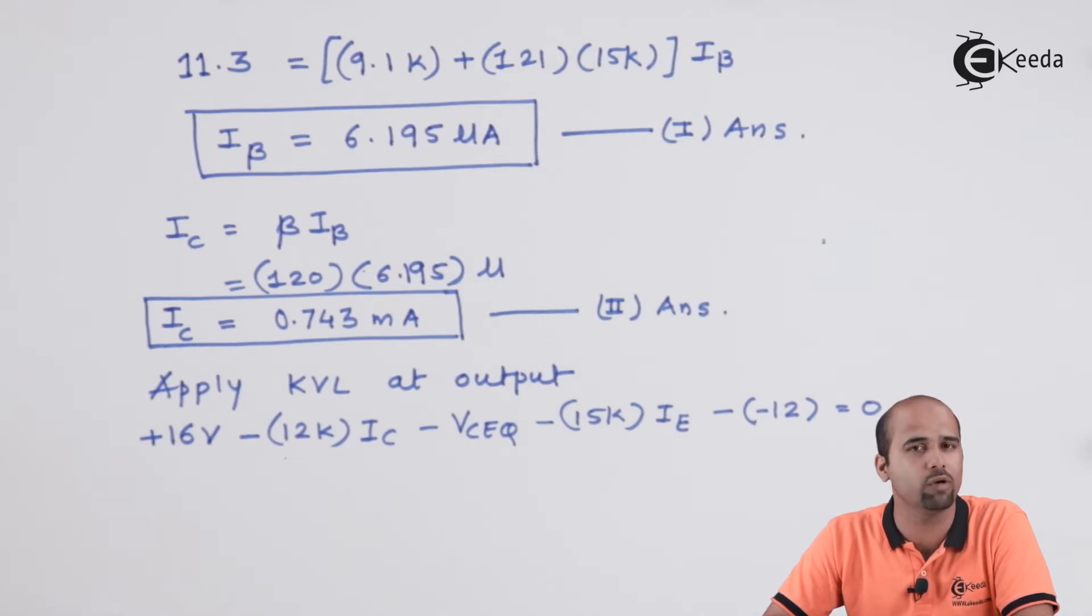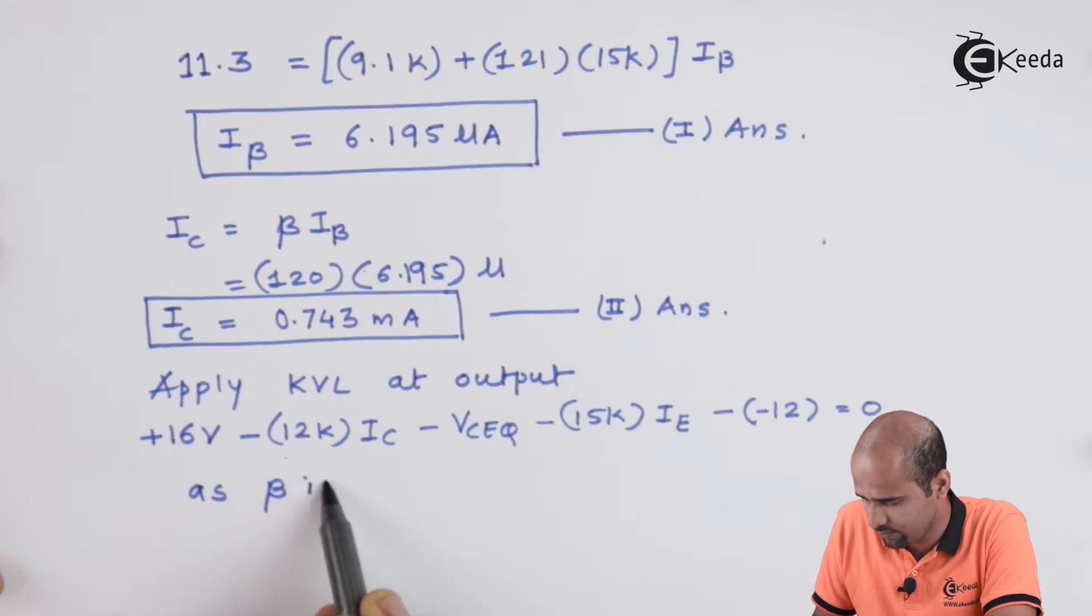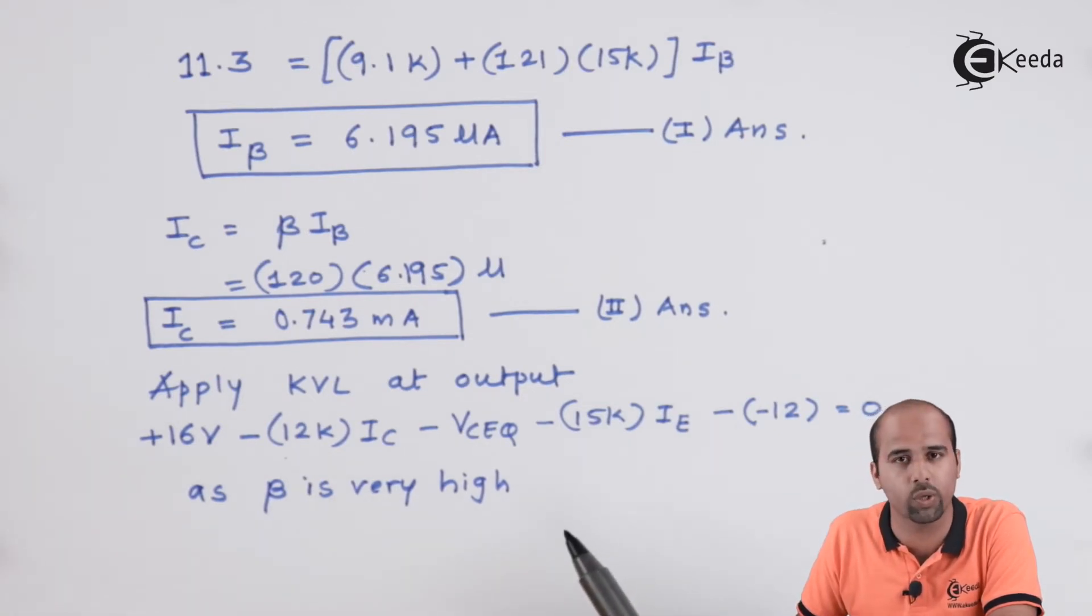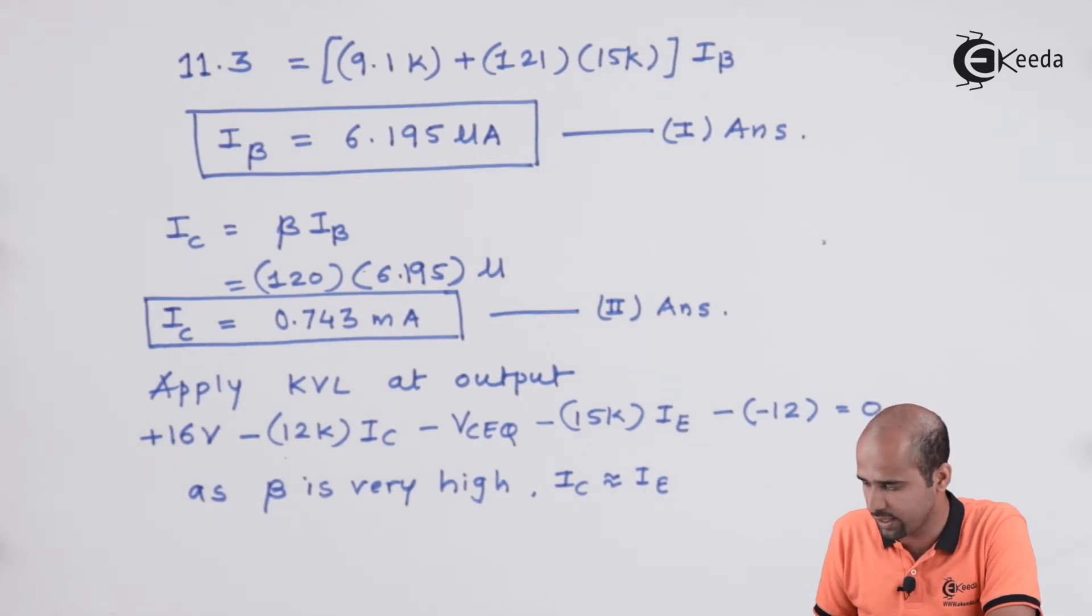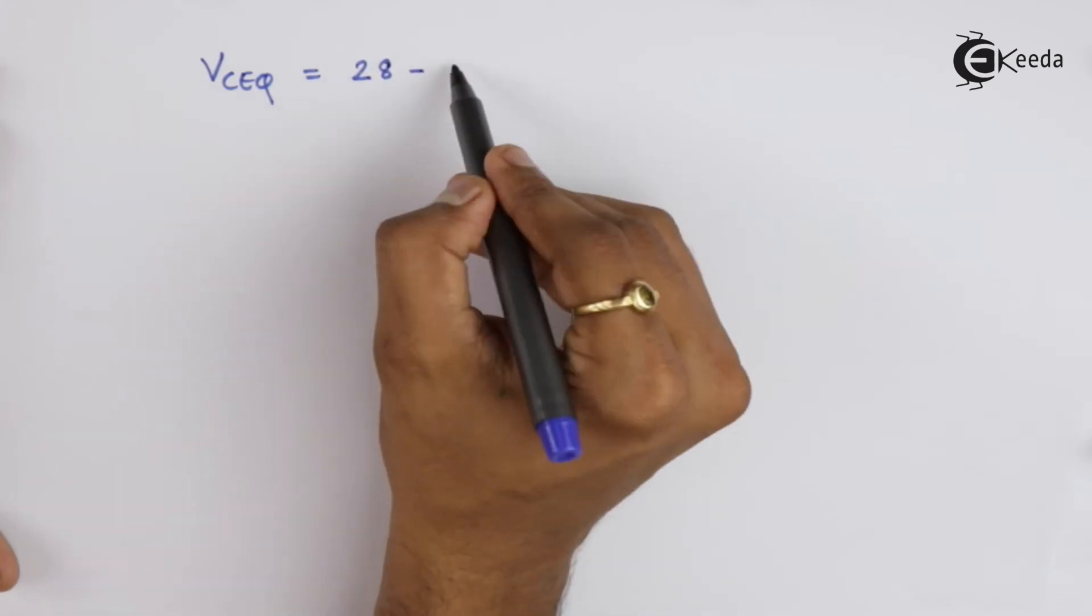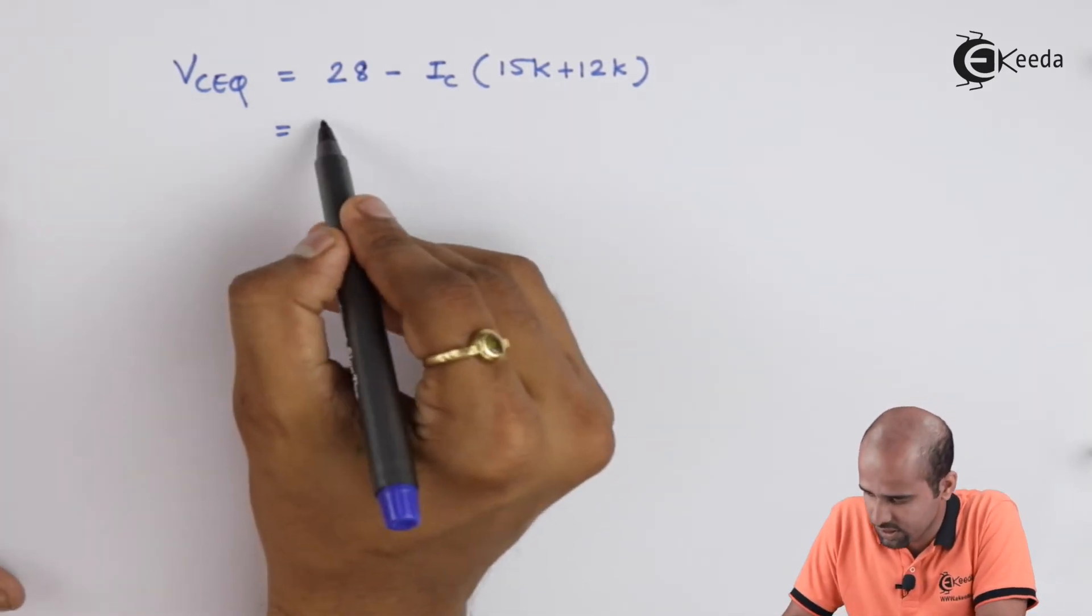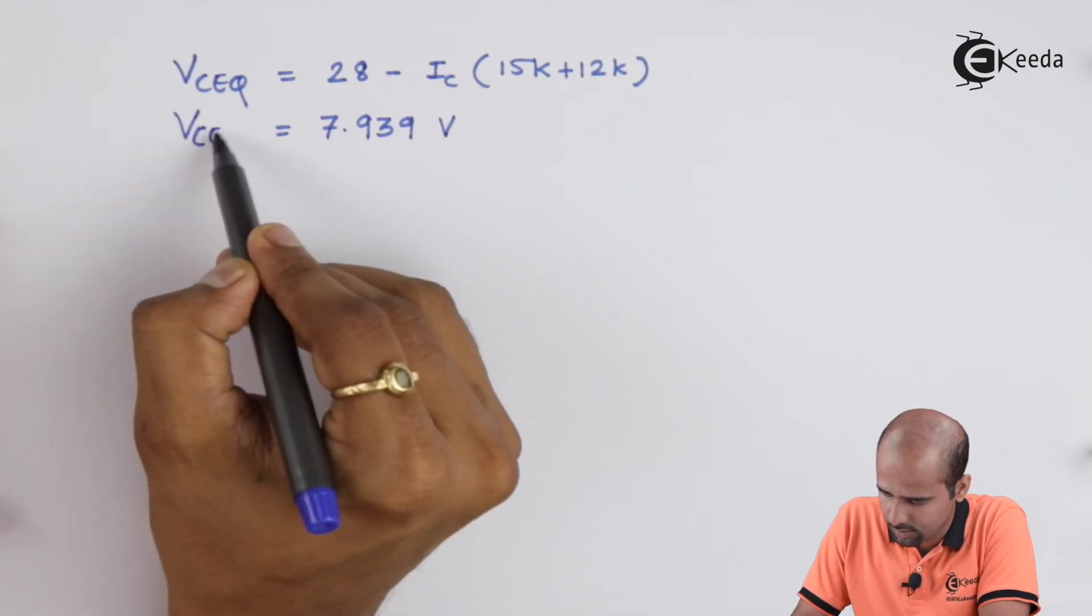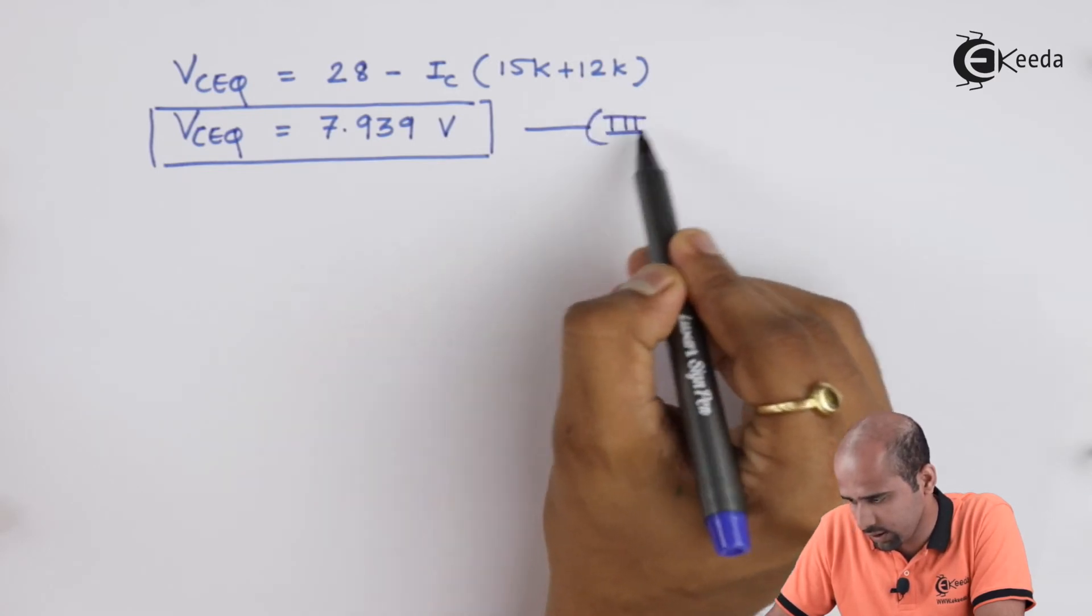Keep this in mind. When I will have to keep the value of IC and IE same, we will write the reason as beta is very high. When beta is very very high, I can say that your alpha is approaching towards 1. If alpha is approaching towards 1, I can say IC is nearly equivalent to value of IE. So, I will take the value of IC is equal to IE only and then we can proceed further to find out the value of VCEQ. IC is known to us that is 0.743. So, VCEQ will become 7.939 volts. This is the third finding for this numerical.